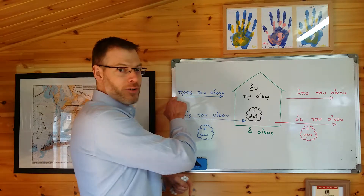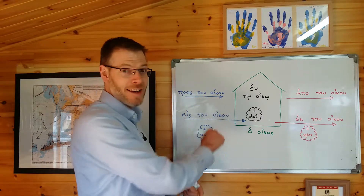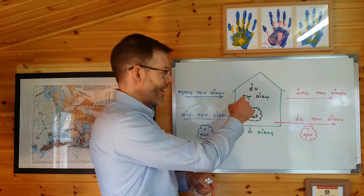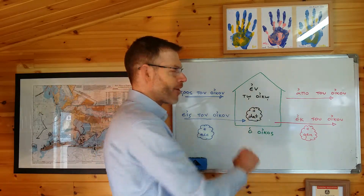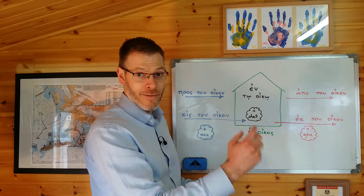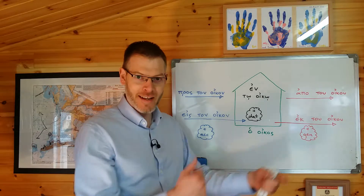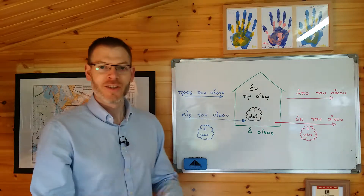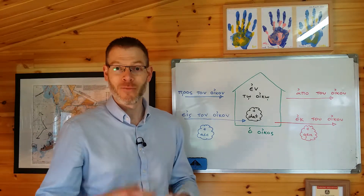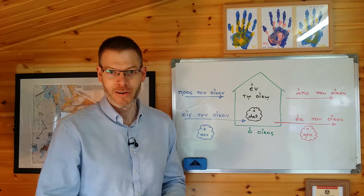If you're just starting out with Greek, just learn the meanings you've been given so far. Learn pros — towards; eis — into; en — in; apo — from, in the sense of away from; ek — from, in the sense of out from. Just learn that stuff and you'll be fine. We'll build up the complexity as we go along.